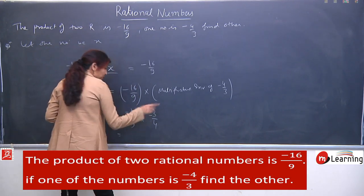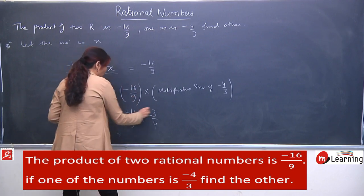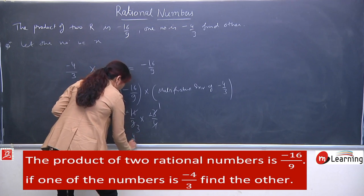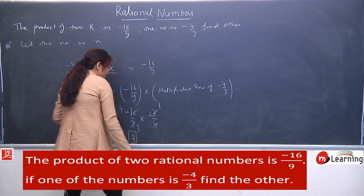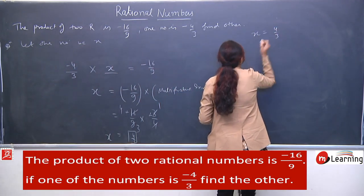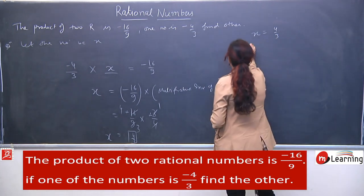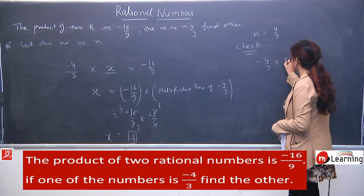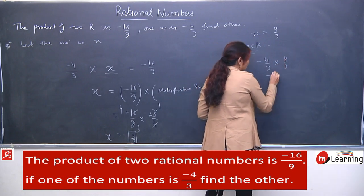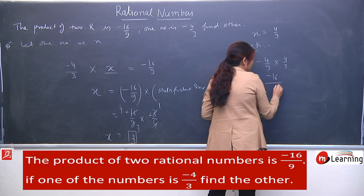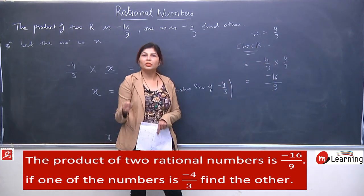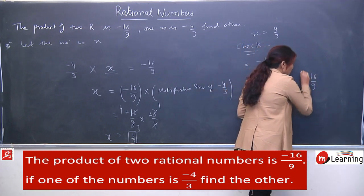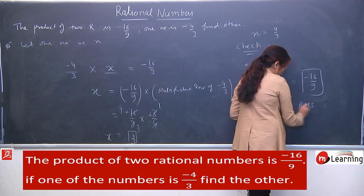Ab aap solve karenge. Sabse pehle minus and minus will remove — kyunki plus ban jayega, minus minus is plus. 4 fours are 16, and 3 threes are 9 — so your answer is 4 upon 3. Means x, jo aap ne assume kiya tha, woh aapke paas aa gaya: x equals to 4 upon 3. Now we will check — teacher ke check karne se pehle. Our equation was: minus 4 by 3 multiply by x, which is now 4 by 3. Minus 4 and 4 will give minus 16, and 3 threes are 9. Numerator multiplies to numerator and denominator to denominator — answer: minus 16 by 9. This is LHS and RHS bhi minus 16 by 9 — so LHS equal to RHS, means verified!